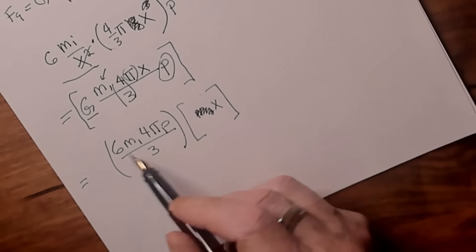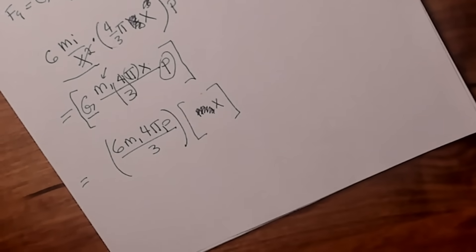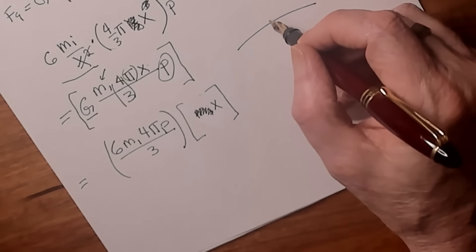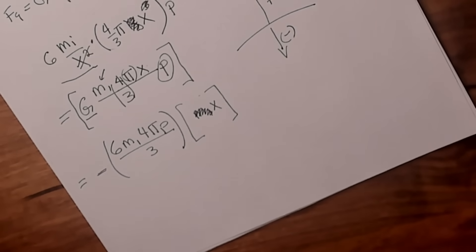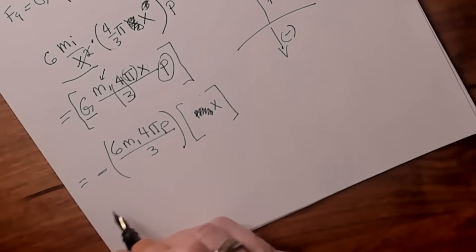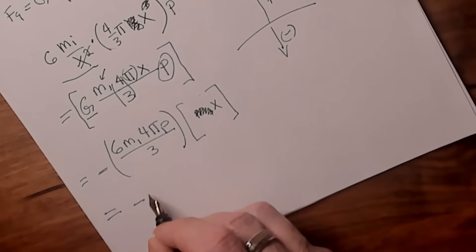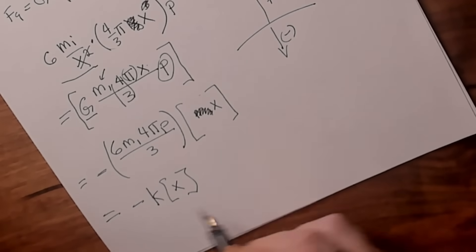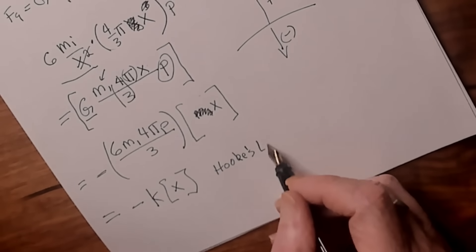Now we have something interesting — all the constants on one side and just the variable x on the other. We also need to add a negative sign, because falling toward the center of the Earth is the negative direction. Since all the constants are not going to change, let's just call them k. Now all we have left is force equals negative k times x. Some of you may recognize this — this is Hooke's Law.